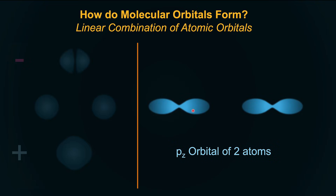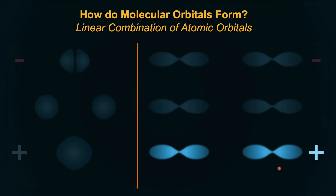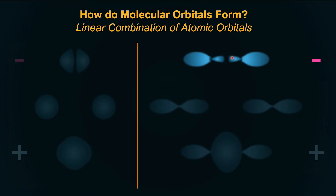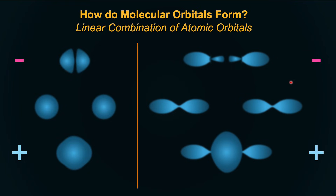Let's look at Pz orbitals — that's the head-on collision. There is a node already. Constructive interference increases density between the nuclei; destructive adds one more node and reduces density between the nuclei. Mathematically, constructive is ψ1 + ψ2 and destructive is ψ1 − ψ2 — same logic. Both of these happen because of overlap of orbitals along the axis of collision.